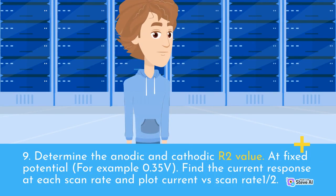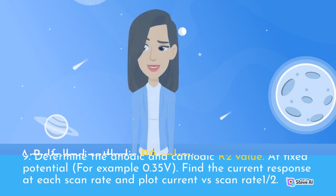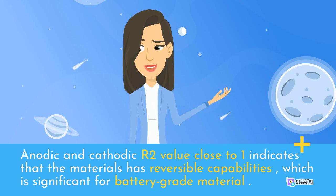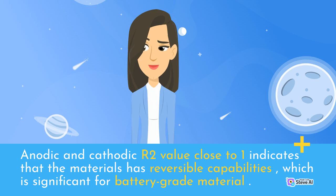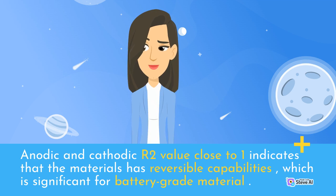Step 9: Determine the anodic and cathodic R² value. At a fixed potential, for example 0.35 V, find the current response at each scan rate and plot current versus scan rate^(1/2). Anodic and cathodic R² values close to 1 indicate that the material has reversible capabilities, which is significant for battery-grade material.